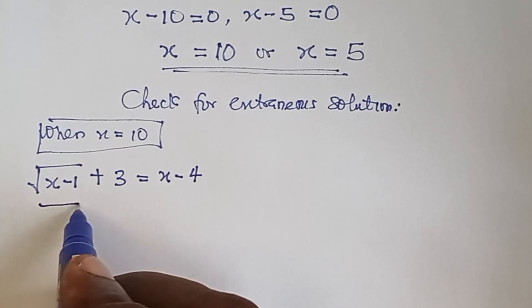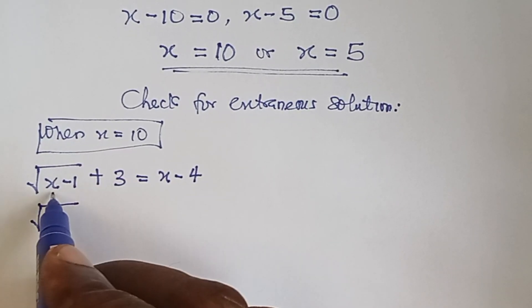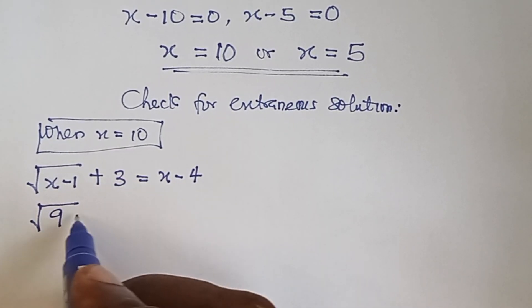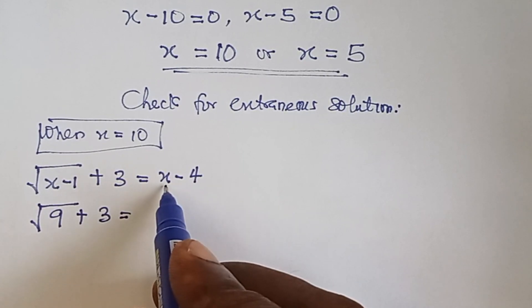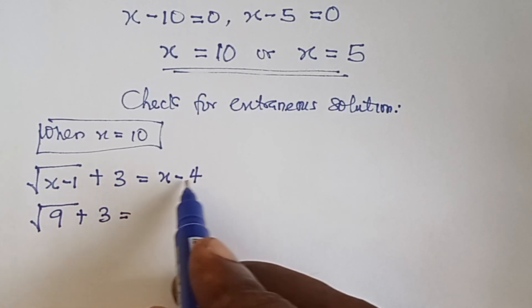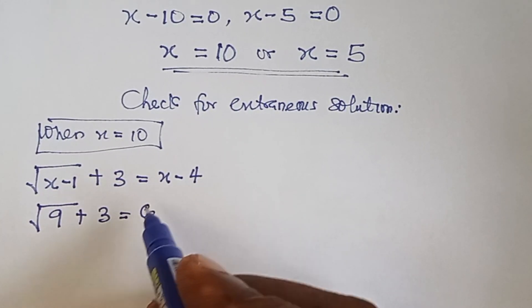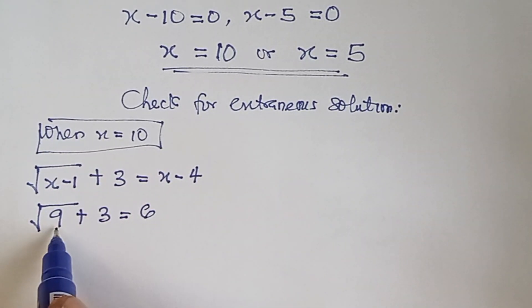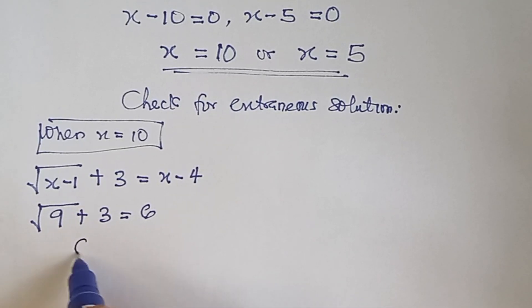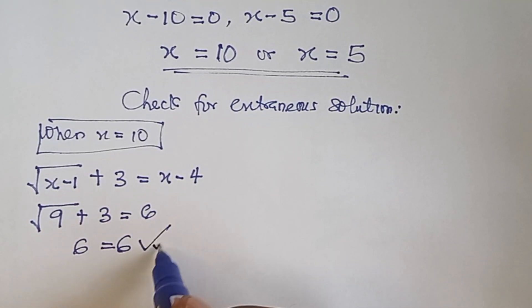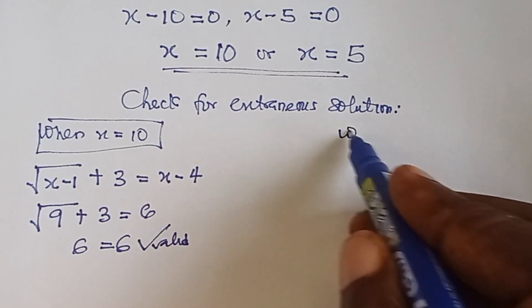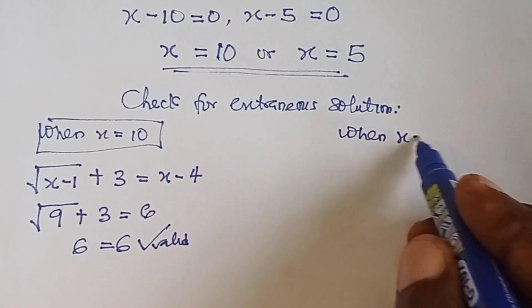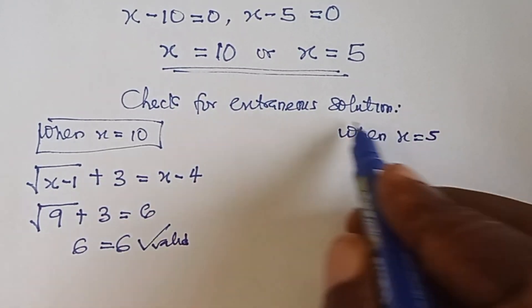When x equals ten: square root of ten minus one plus three equals ten minus four. That gives square root of nine plus three equals six. Square root of nine is three, three plus three is six, and six equals six. So x equals ten is valid.